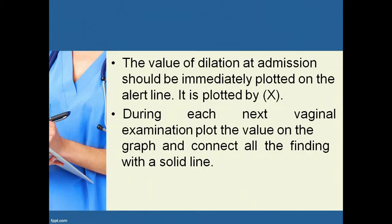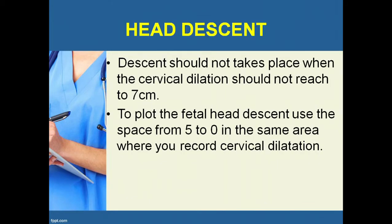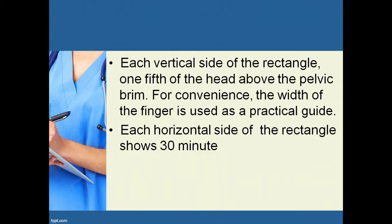The value of dilatation on admission should be immediately plotted on the partograph at the appropriate time, marked with an 'X'. During each subsequent vaginal examination, plot the value on the graph and connect all findings with a solid line. Head descent should not be plotted until cervical dilatation reaches seven centimeters.